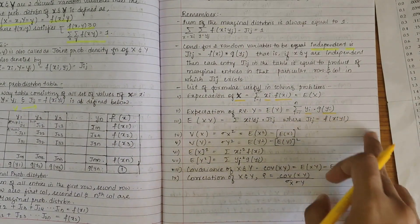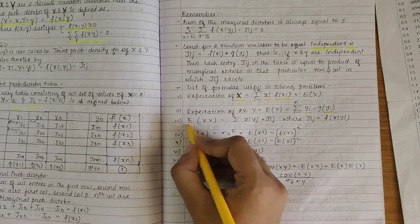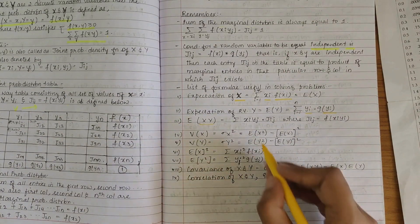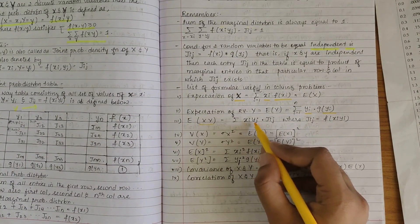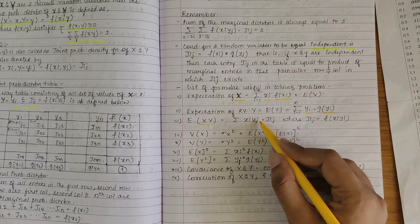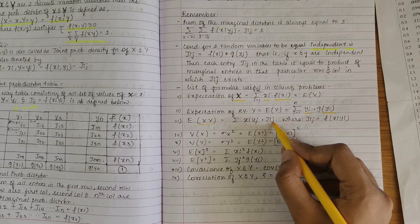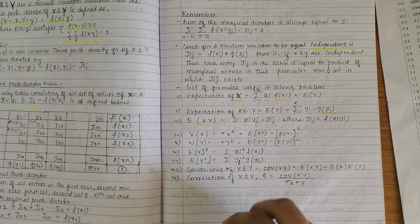And expectation of XY is Xi Yj into j(i,j). So it's like multiplying both.